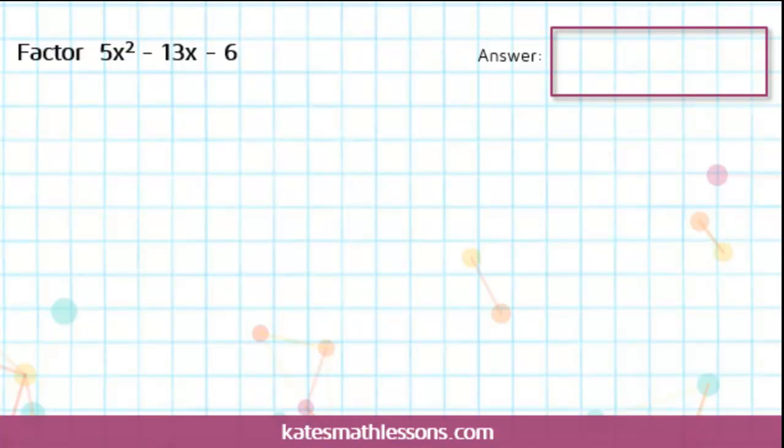We've been given a quadratic expression that we need to factor. In other words, we need to figure out what we could put inside two sets of parentheses so that when we simplify them, when we multiply them together using FOIL, we end up with this expression here.